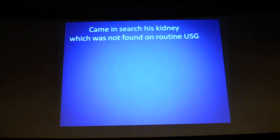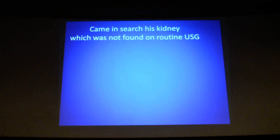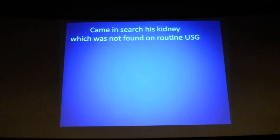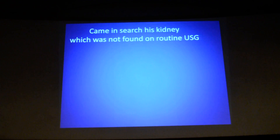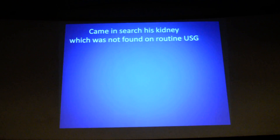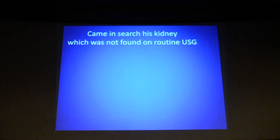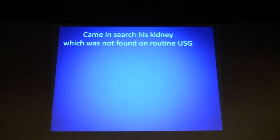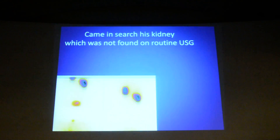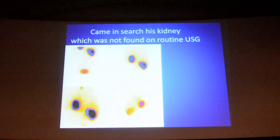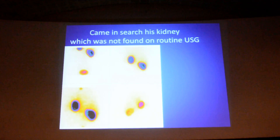Here is one interesting case. A tall foreign man came searching for me in the nuclear medicine department, asking for Dr. Kavitha. After he saw me, he said he had come in search of his kidney, which was not found on prior ultrasound. The ultrasound report noted nothing could be found in the pelvis or either renal fossa. We injected DMSA — he is a tall person, and this is the normal kidney, but here you can see the other kidney is almost very high up.